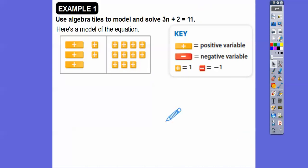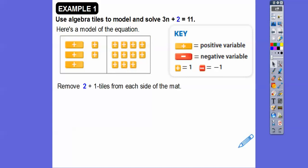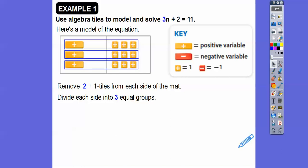Here's our 3n plus 2, and remember this is equal — so equals — there are 11 of these tiles here. Now let's go ahead and remove two of the plus-1 tiles from both sides. As long as we do it to both sides, I'm going to take out those two, so they're gone. Now we're going to divide each side into three equal groups — there they are right there.